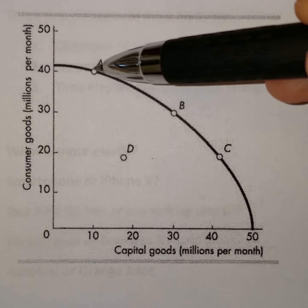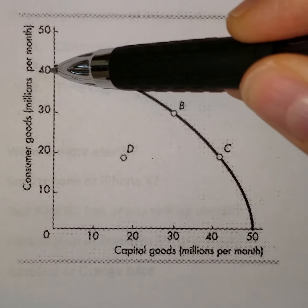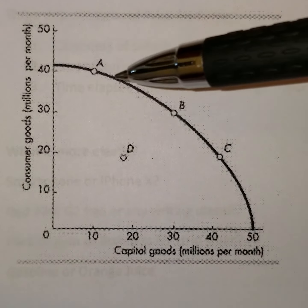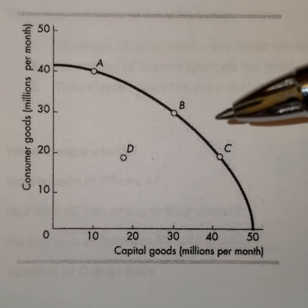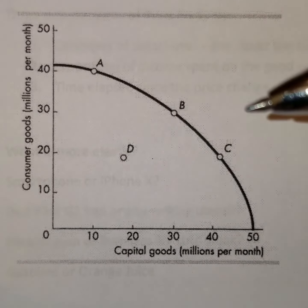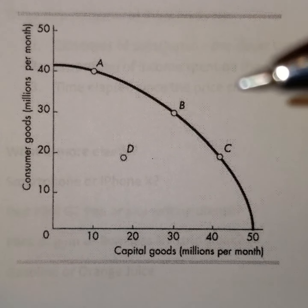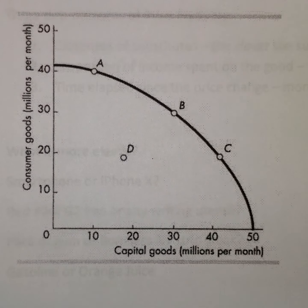Now, if we're looking at point A or country A, they're producing a lot of consumer goods, but not very many capital goods. Country B is producing a pretty equal amount of both. Country C is producing some consumer goods, not a tremendous amount, but they're producing a lot of capital goods. D, we learned before, is going to be productively inefficient — we don't want to choose that point.